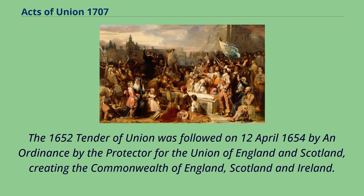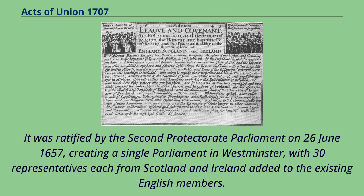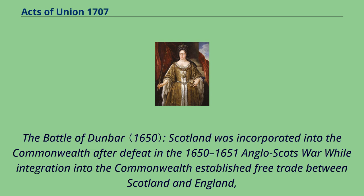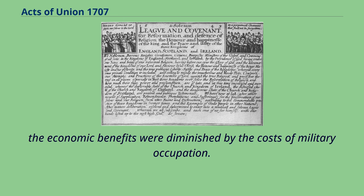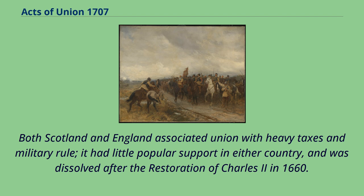The 1652 Tender of Union was followed on April 12, 1654 by an ordinance by the Protector for the Union of England and Scotland, creating the Commonwealth of England, Scotland, and Ireland. It was ratified by the Second Protectorate Parliament on June 26, 1657, creating a single Parliament in Westminster with 30 representatives each from Scotland and Ireland added to the existing English members. While integration into the Commonwealth established free trade between Scotland and England, the economic benefits were diminished by the costs of military occupation. Both Scotland and England associated union with heavy taxes and military rule, it had little popular support in either country, and was dissolved after the restoration of Charles II in 1660.